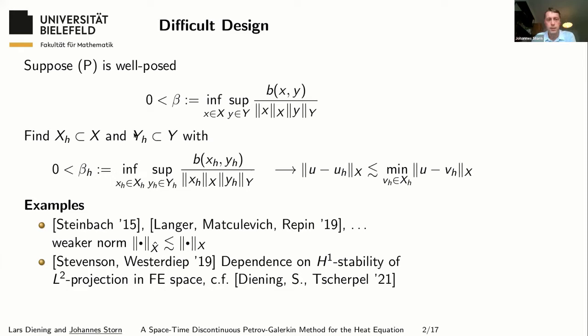Therefore, they replace the norm in the ansatz space by some weaker norm, which leads to a well-posed problem. But the left-hand side in the quasi-optimality result is then with a weaker norm, so we have some kind of weakened quasi-optimality result. The only approach I know which is able to overcome this difficulty goes back to Stevenson and Vestadeep, and will probably be discussed in the following talk.